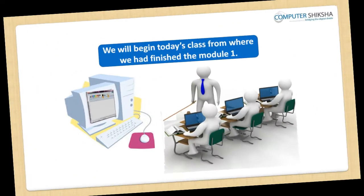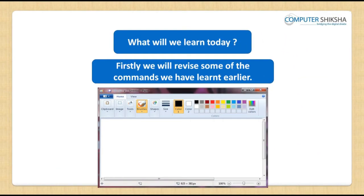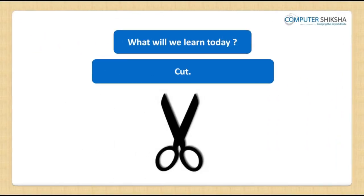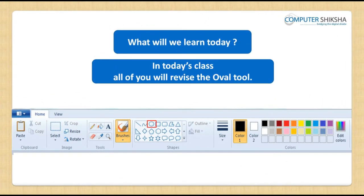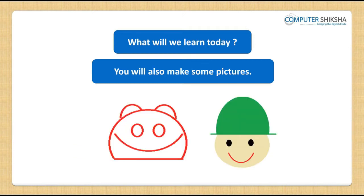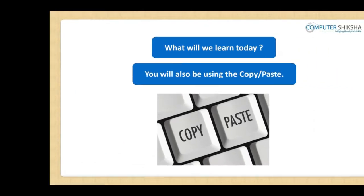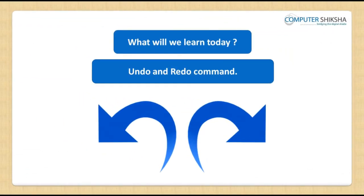We will begin today's class from the part of the first module where we had finished earlier. Firstly, we will revise some of the commands we have learnt earlier like Copy, Paste, Cut, Undo, Redo and Select. In today's class, all of you will revise the Oval Tool and will use Color Box 1 and Color Box 2. You will also make some pictures using the Oval Tool, and use the Copy, Paste, Cut, Undo and Redo commands.